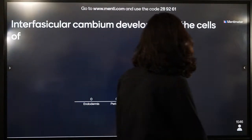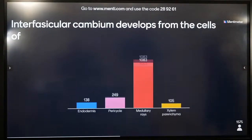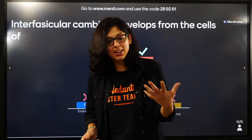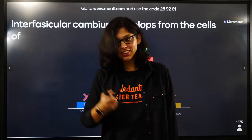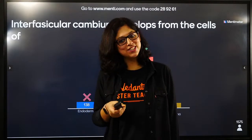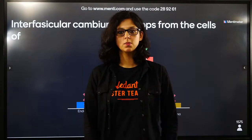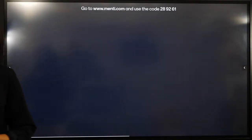Inter-fascicular cambium develops between the fascicles - between the bundles. Obviously inter-fascicular cambium comes from the medullary rays. They come from medullary rays.